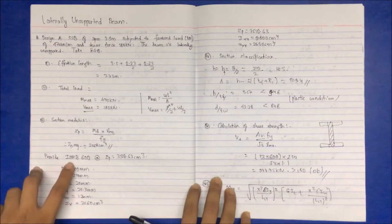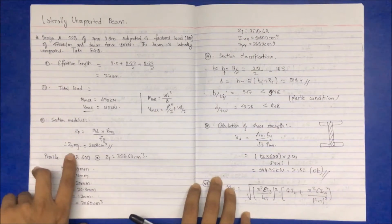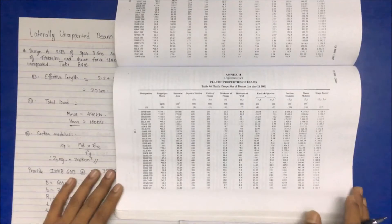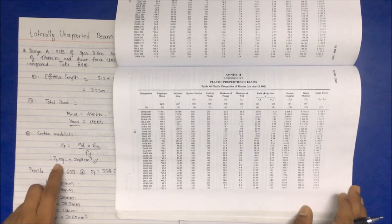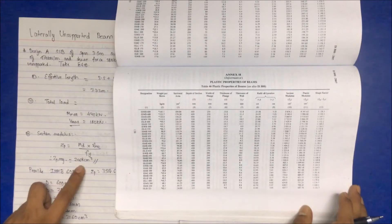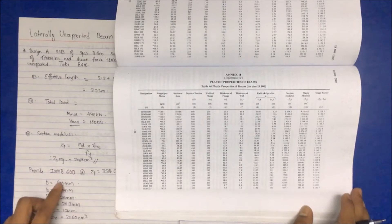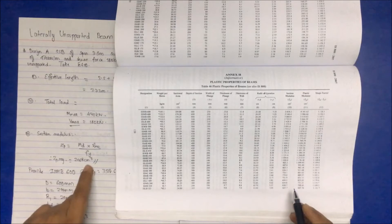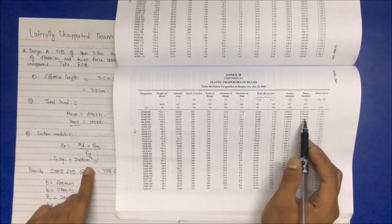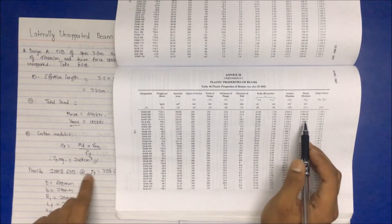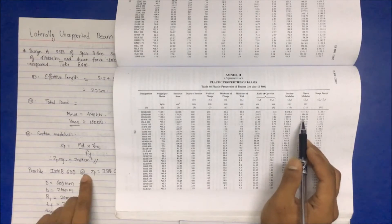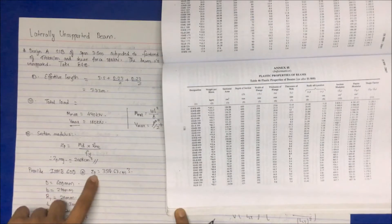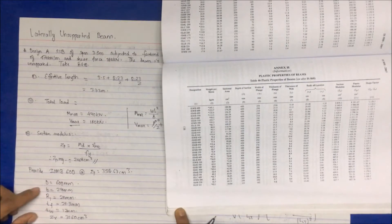From the steel table, go to Table 46 and search for a ZP value greater than the calculated requirement of 2068 cm³. We provide ISMB 600, which has ZP = 3510.63 cm³, which is greater than 2068. So the selected section is ISMB 600.